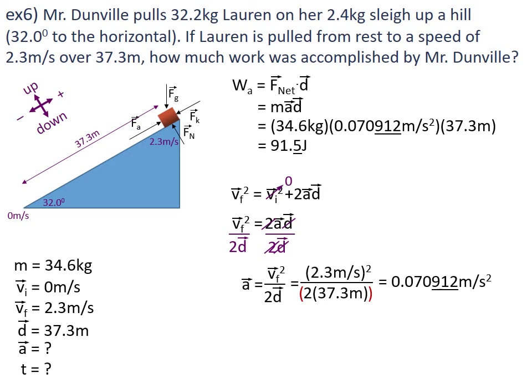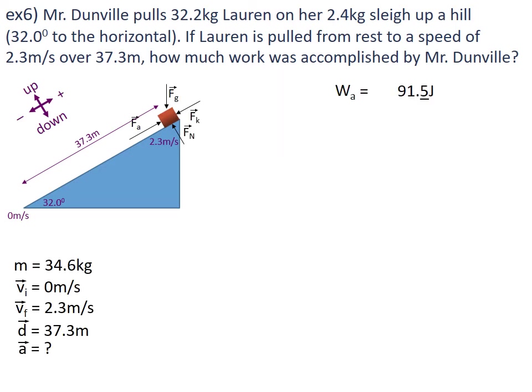Pause and copy this down now before we move on. Now that we have established how much work was done accelerating the object, let's calculate how much work was done lifting it — that is, work done against gravity. Work against gravity equals F_g multiplied by displacement vertically. F_g equals mg, so I substitute that in: work against gravity equals mgd, where d is the vertical displacement.